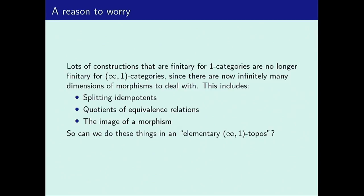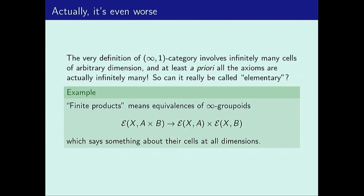That would be a problem because we want to be able to do homotopy theory inside an elementary infinity topos. It's actually even worse than that, because the very notion of infinity-one category is itself not finitary. These axioms that I wrote down — depending on how you write them down — might even look infinitary. Having finite products is an equivalence of infinity groupoids, and one way to understand that is that it's talking about an equivalence of homotopy groups at all dimensions, which is not a finite statement.